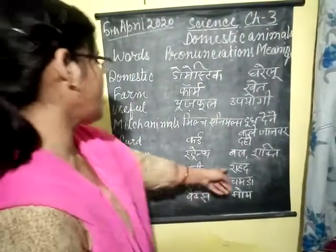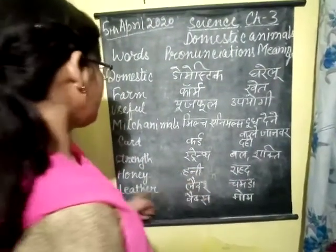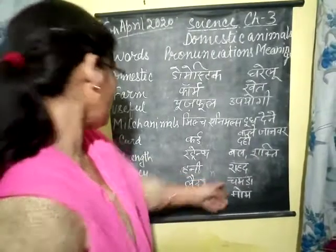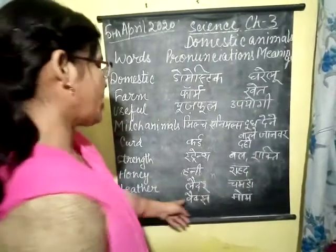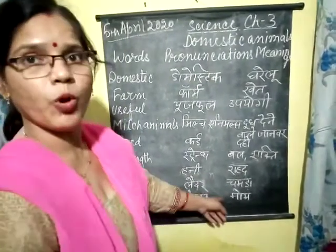Honey means Shahed. Rather means Chamda. Wax means Mom.